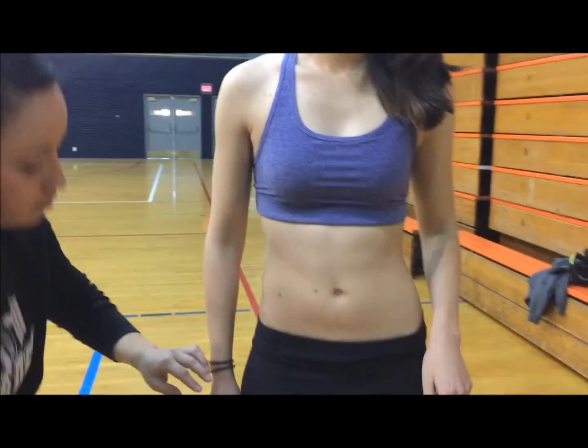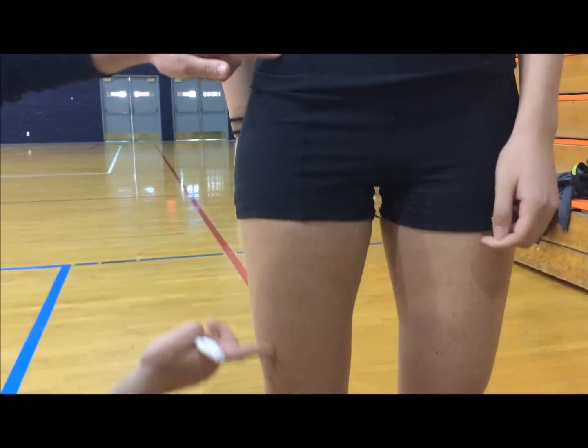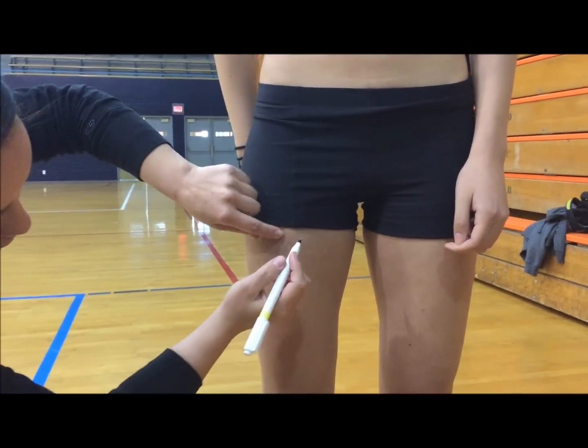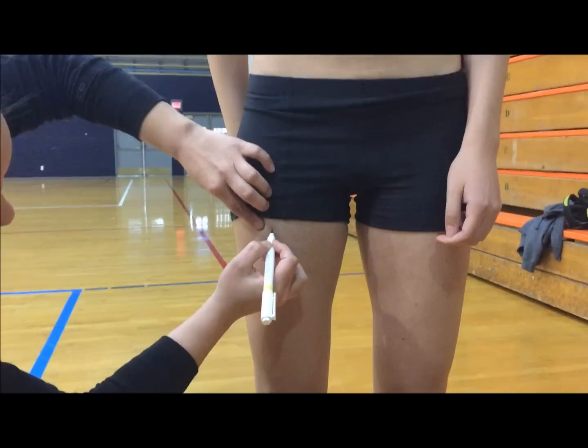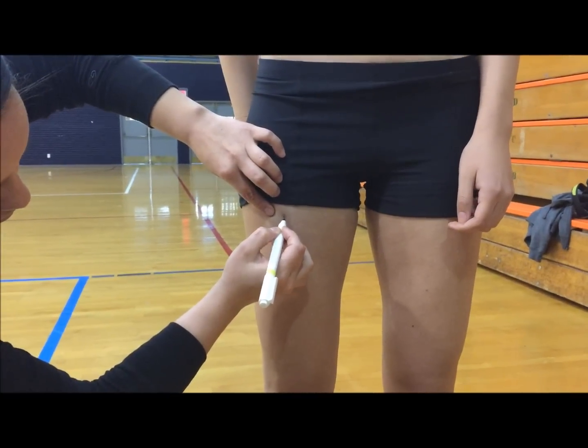In the thigh area, it is midway between the proximal border of the patella, which is the knee, and the inguinal crease at the hip. It is the anterior midline of the thigh.